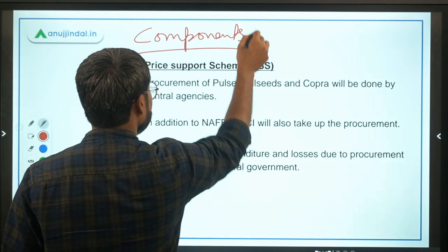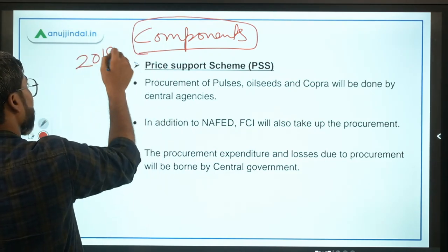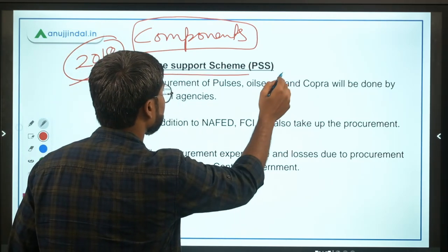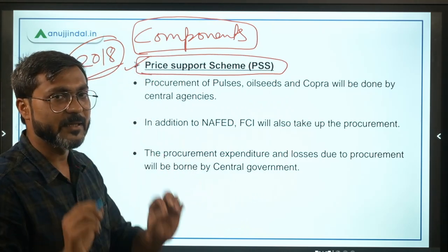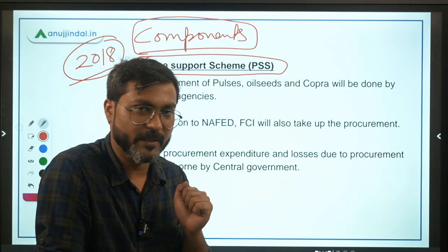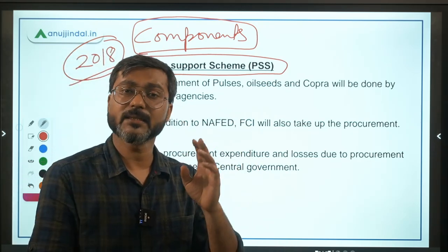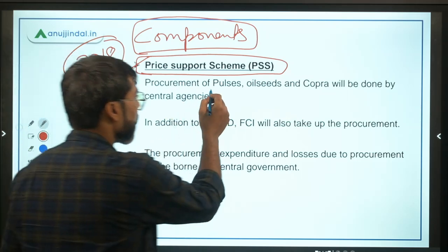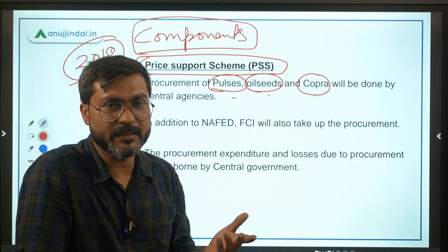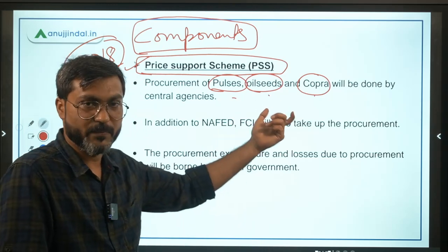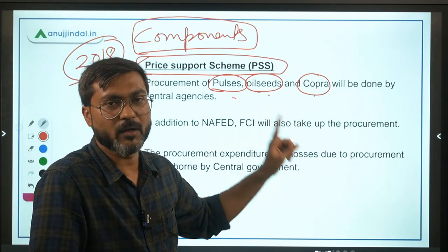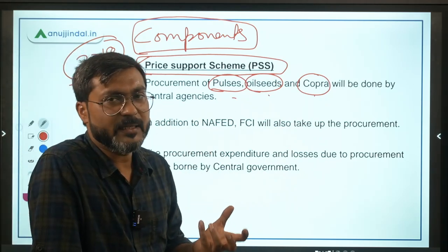The only thing to remember is the launch year 2018. The first component is the Price Support Scheme (PSS). This component is only for three crops: pulses, oil seeds, and copra. Under this, the central government procures these three crops through NAFED and FCI.